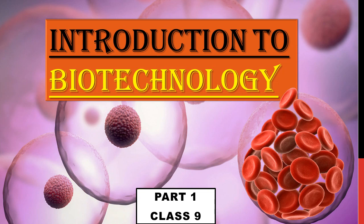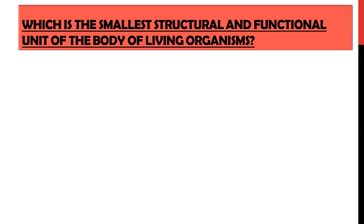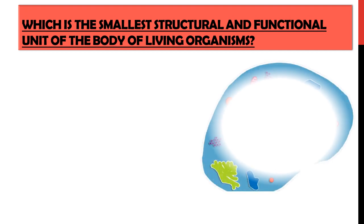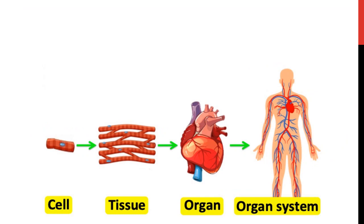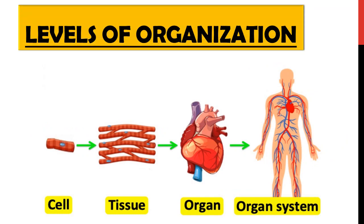One question: which is the smallest structural and functional unit of the body of a living organism? It is a cell. The cell is a basic structural and functional unit of the body which makes an organism. On screen you can observe a picture of a cell with its nucleus and different cell organelles like mitochondria, ribosome, and lysosomes.